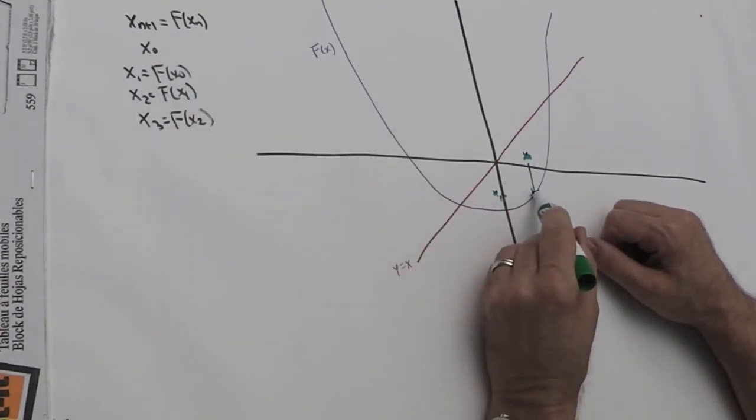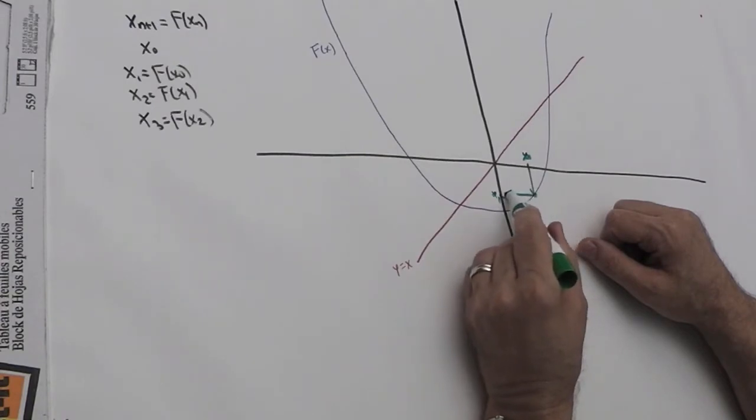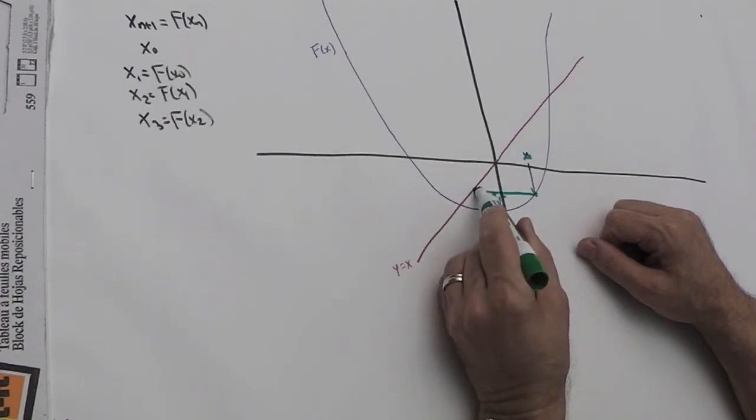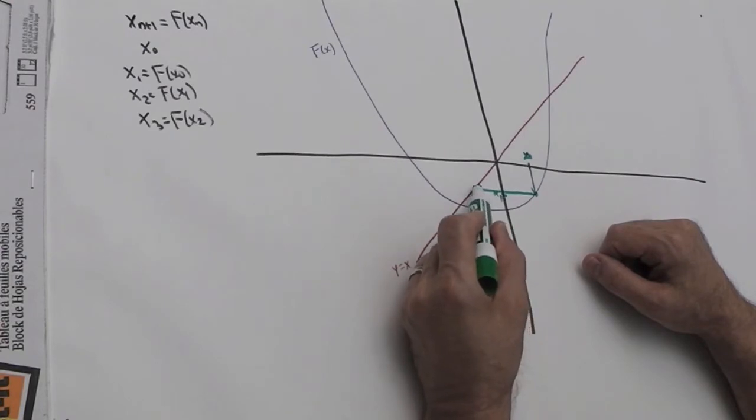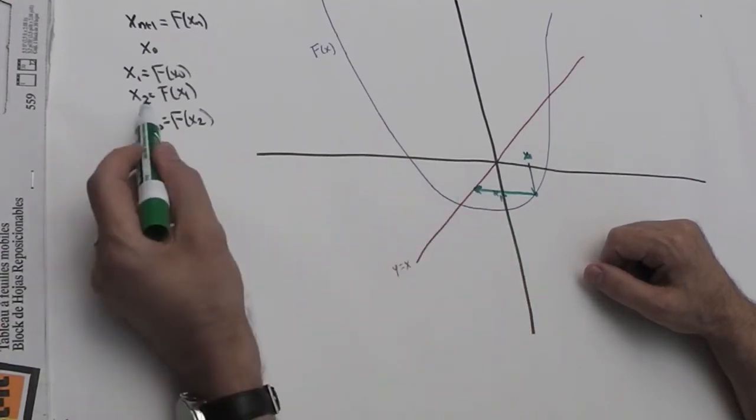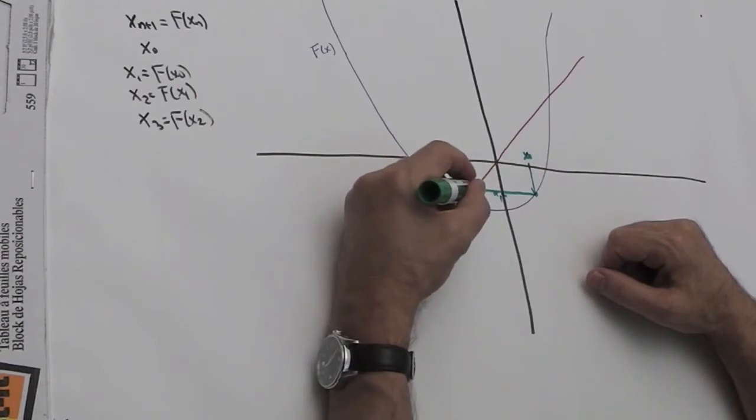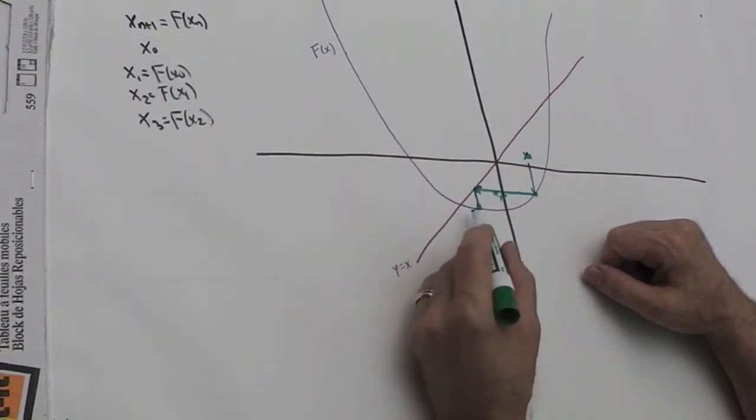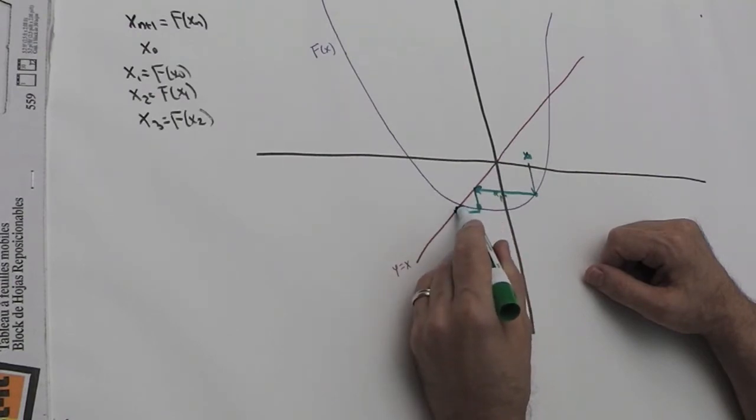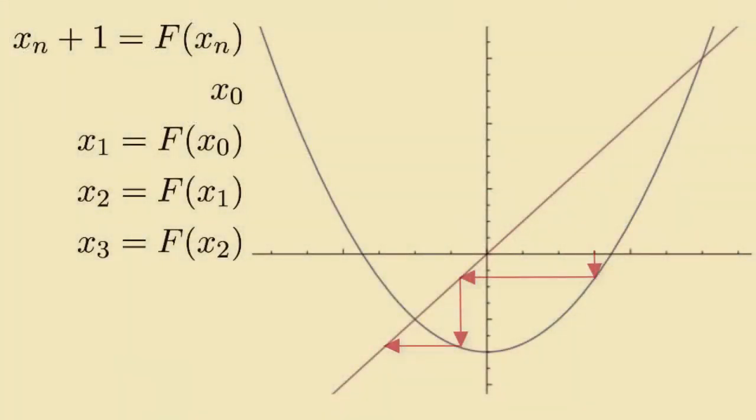The cobweb diagram moves over to the line y = x, because every point on that line has the same x and y coordinates. This interchanges the y coordinate for the x coordinate, and now I can plug that into f again to find x_2. We go to the graph of f, then interchange the output for the input by going over to y = x, and then go up to the graph of f.